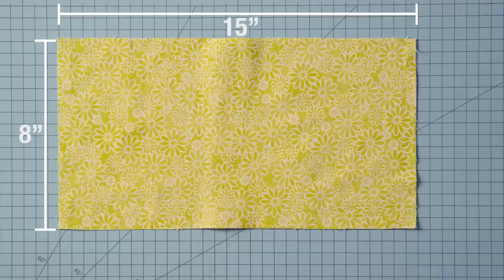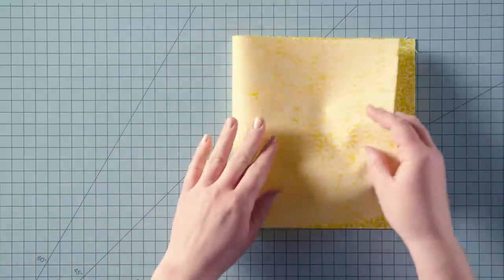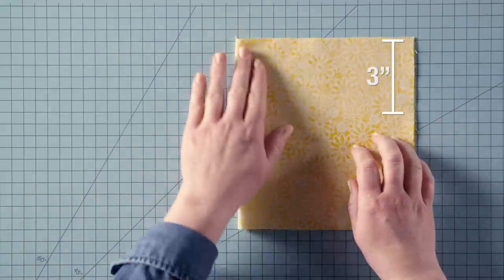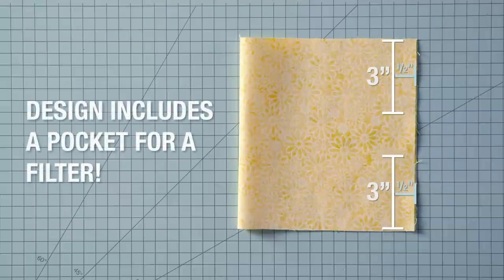Begin by cutting a 15 inch by 8 inch piece of fabric. Fold it in half, then measure 3 inches in from each edge and mark, leaving a space between the marks open to accommodate a filter.